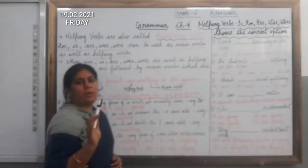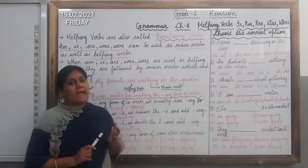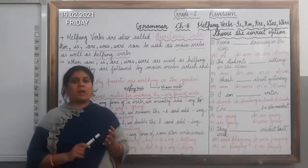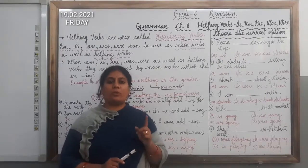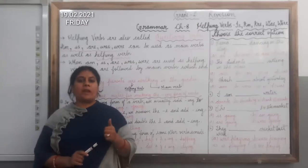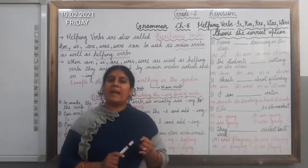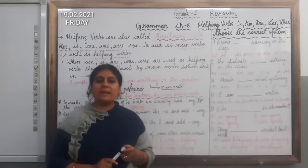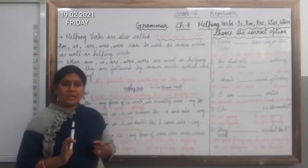I hope you all know the usage of am, is, are, was, were. Am, is, are are used in the present time. Was and were are used in the past time. Am is always used with the pronoun I. Is is always used with the singular noun, and with the pronouns like he, she and it. Are is used with the plural noun and with the pronouns like you, we, they.